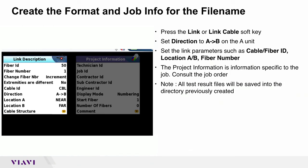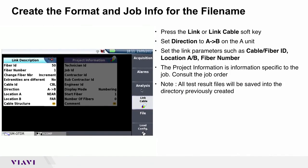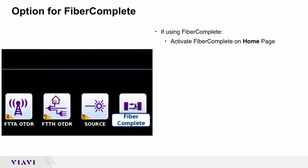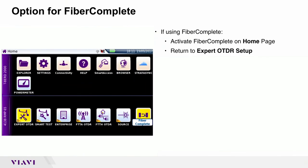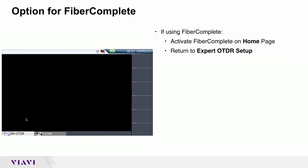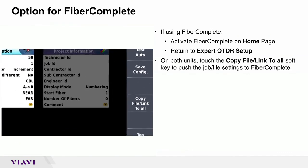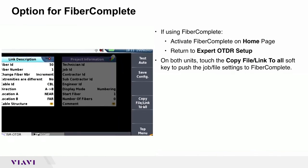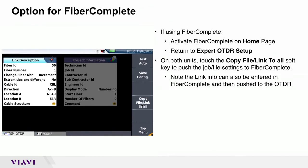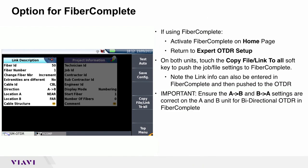All test results will be saved into the directory previously created. If using FIBER COMPLETE, activate the FIBER COMPLETE function from the home page, then return to the Expert OTDR setup. On both units, touch the COPY, FILE, or LINK TO ALT soft key to push the job and file settings to FIBER COMPLETE. Note that the LINK info can also be entered in FIBER COMPLETE and then pushed to the OTDR. It is important to ensure that the A to B and B to A settings are correct on the A and B units for bidirectional OTDR testing in FIBER COMPLETE.